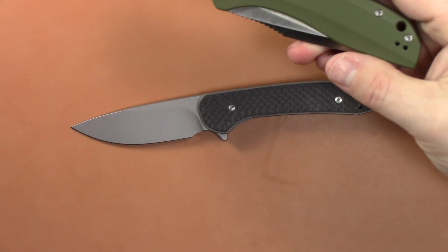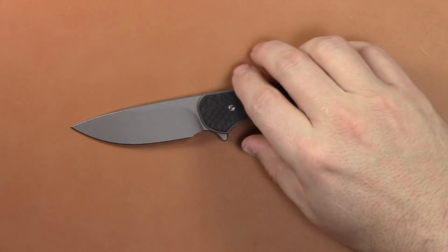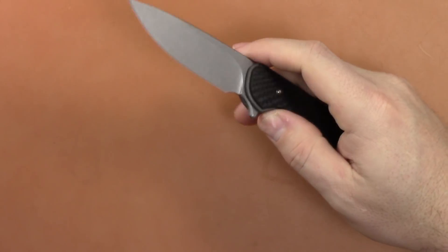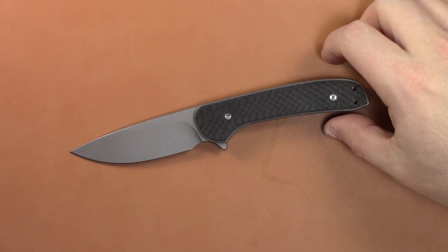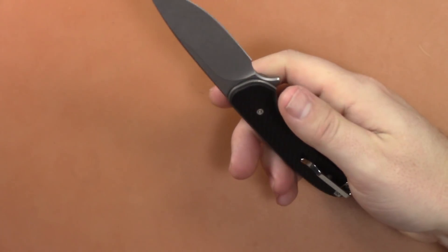But for $30 more, $40 more, you get a much better steel, you get titanium, G10 - just a little bit better materials for not a lot more money. Plus, just a fantastic EDC size.